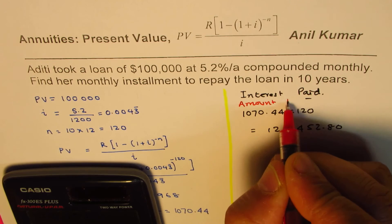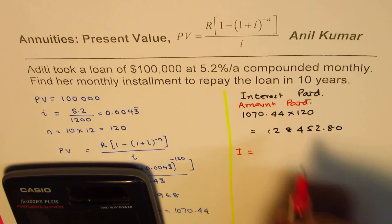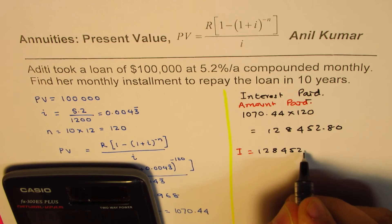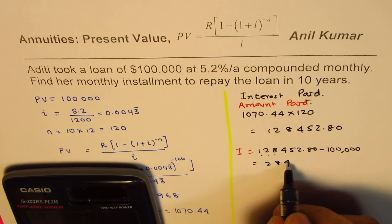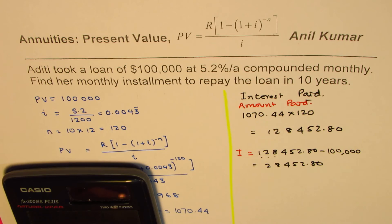So the interest will be the difference of these two. That is 128,452.80 take away 100,000, so it is 28,452.80. That's the amount - $28,500 approximately is the interest paid.